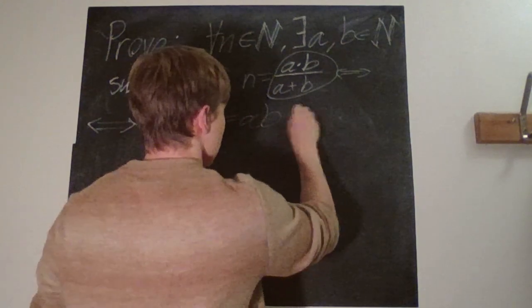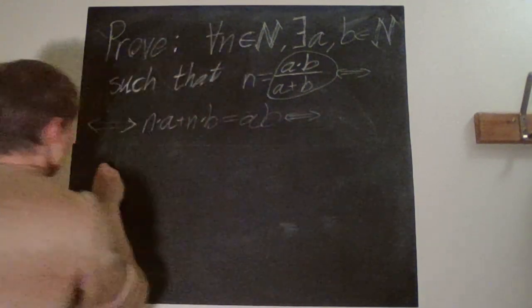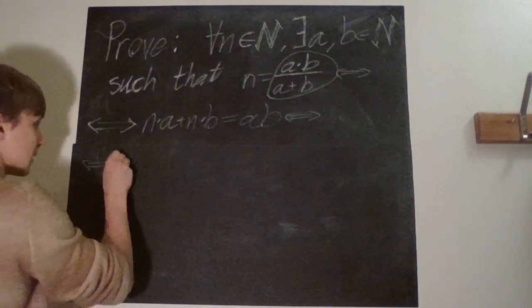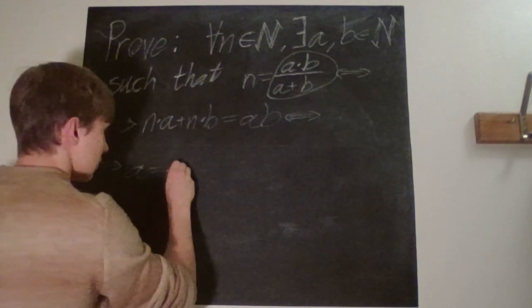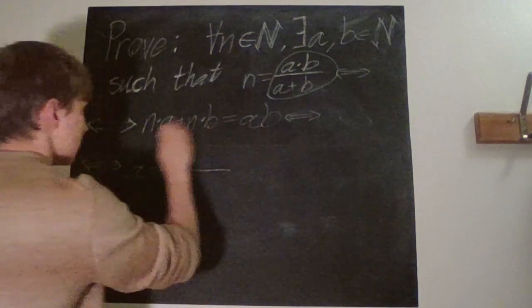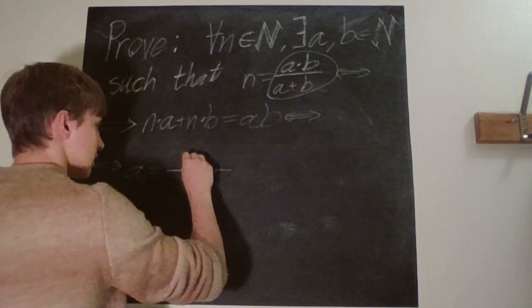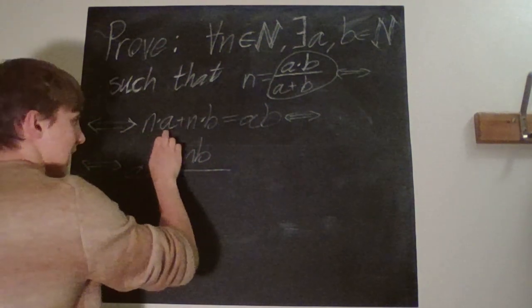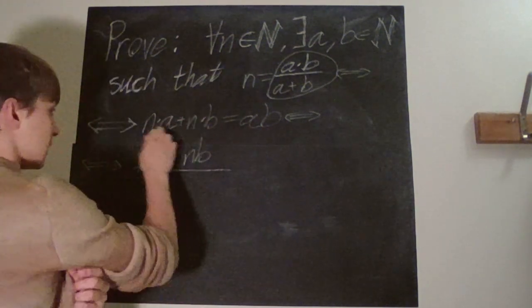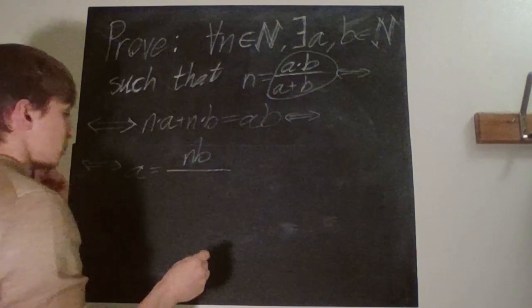We have n times a plus n times b equals ab. Moving this to the other side and moving that over there, we should get that a is equal to... move this over here, so it should be just...